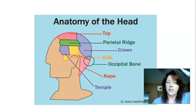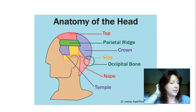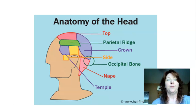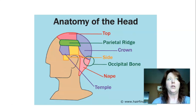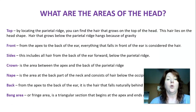Here's a picture of the anatomy: the top, the parietal ridge, the crown, the side, the occipital bone, the nape, and the temple. These are all really important reference points when trying to figure out where you want to create weight or take weight away. It's really important to make sure you know exactly where all these places are.